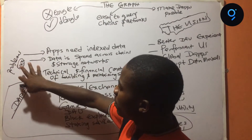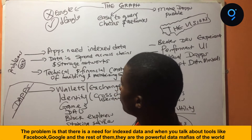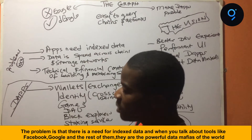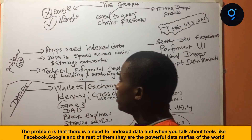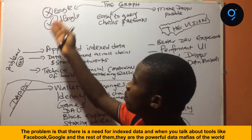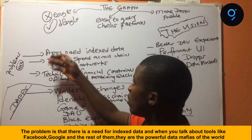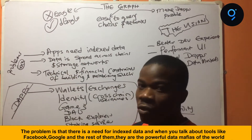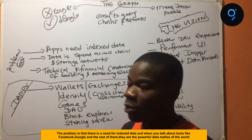So what's one of the problems that The Graph is trying to solve? The problem is that there is a need for indexed data. And when you talk about tools like Facebook, Google and the rest of them, they are the ones that are the data mafias of the world.